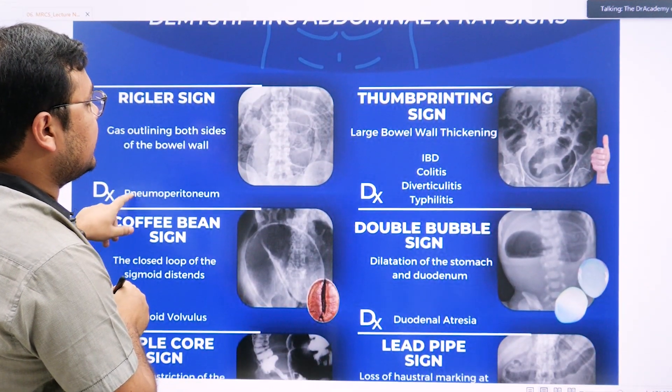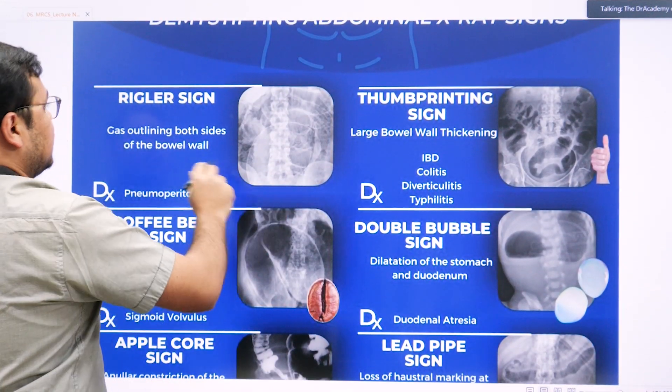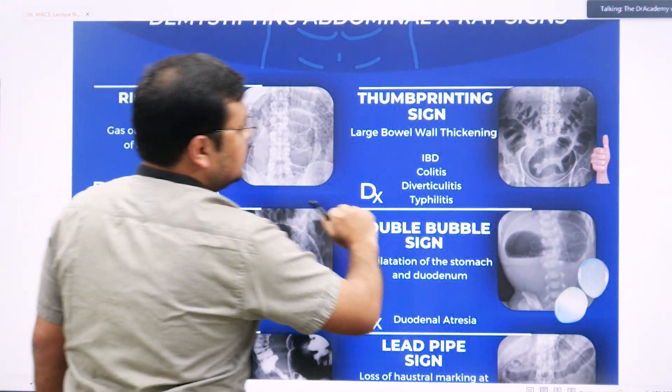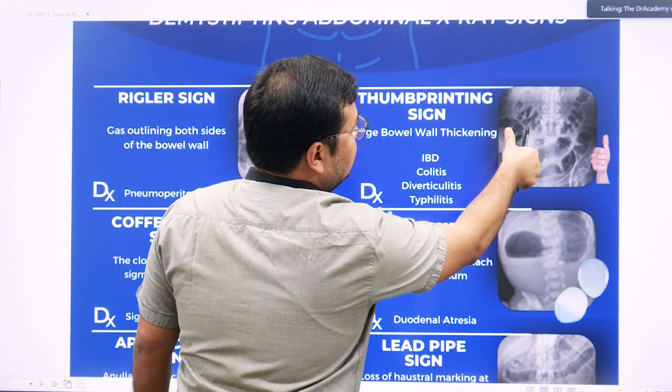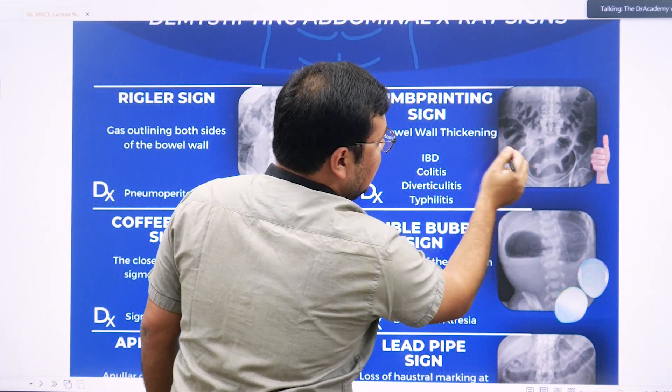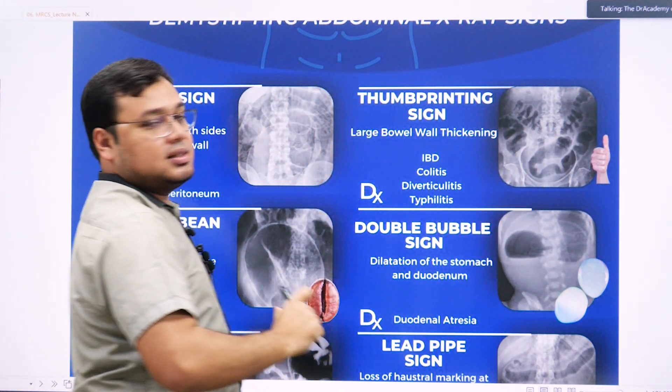The coffee bean sign is a key finding to remember. The thumb printing sign can be found in IBD — inflammatory bowel disease — and is seen on the large gut.